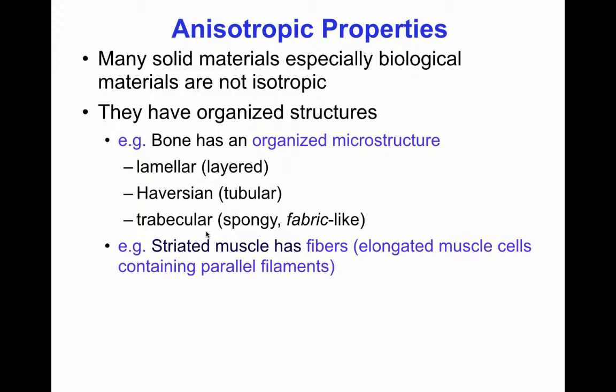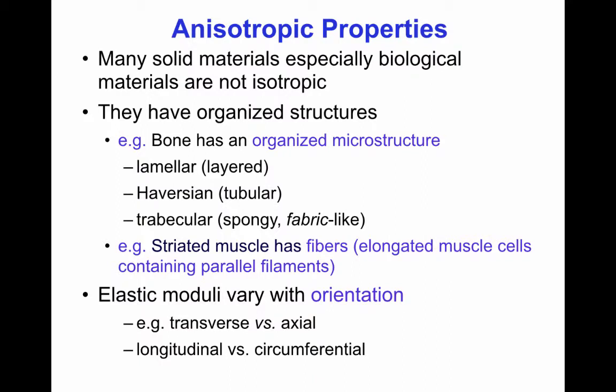Similarly, striated muscles, like heart muscle and skeletal muscle, have fibers which are elongated muscle cells containing parallel filaments, meaning that the properties of muscle along the fiber direction are different from those across the fiber direction. In anisotropic materials, the elastic moduli can vary with orientation — for example, they can be different in the transverse versus axial direction, or in the longitudinal versus circumferential direction, as in the example of a bone.